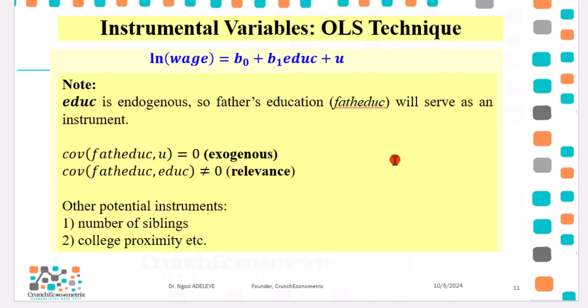I explained all this in the introductory video, so I won't be able to go over them again. If you want to know the properties of a good instrument, please watch the first introductory video. There are other potential instruments that you can use, number of siblings, college proximity, etc.